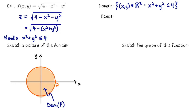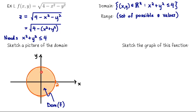What about the range? The range is a subset of R since this is a scalar-valued function — it's the set of possible z values. Starting at the origin where x and y are both 0, z equals √4 = 2. On the unit circle where x² + y² = 1, z equals √3. At the edge of the domain where x² + y² = 4, z equals 0. So the range is the closed bounded interval from 0 to 2.